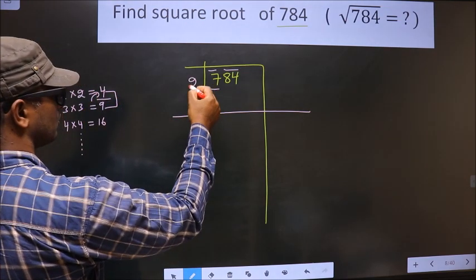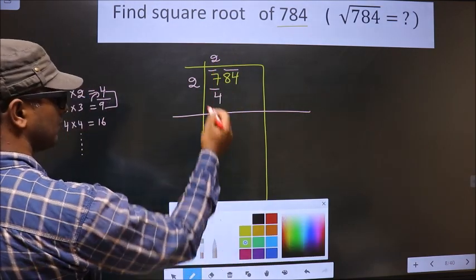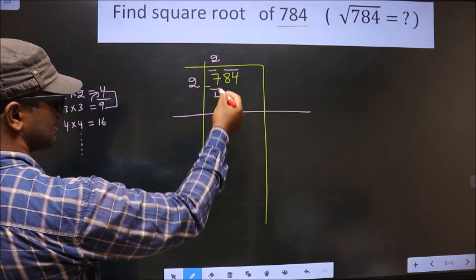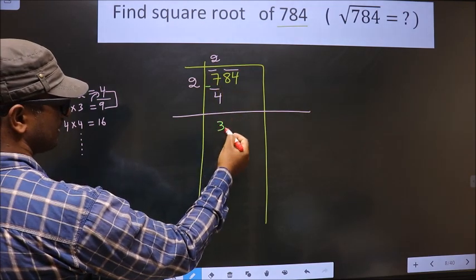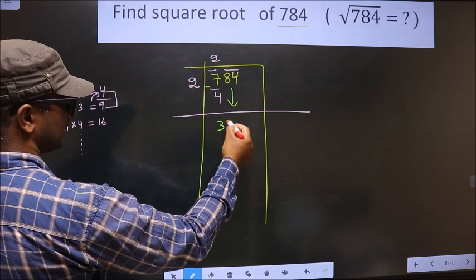4 is 2, 2 is 4. Now we should subtract. 7 minus 4 is 3. Now you take this pair down, making it 384.